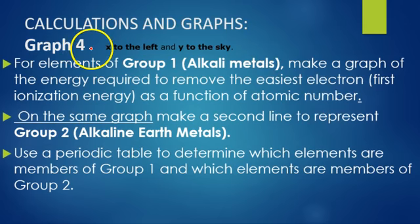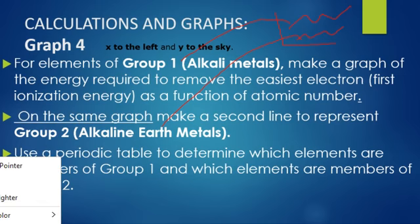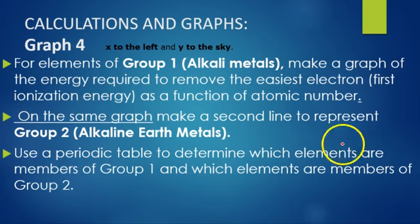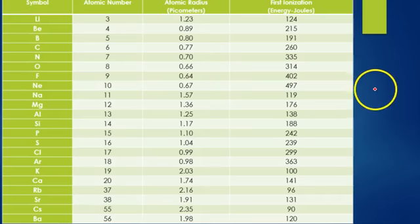For graph number four, you are once again going to make one graph with two different lines on it. One line for your group one elements and the other for your group two elements, graphing atomic number versus ionization energy for just these two families — not all elements on the periodic table. You have to determine which elements are in the alkali family and which are alkaline earth metals, because you're drawing two different lines on your one graph.